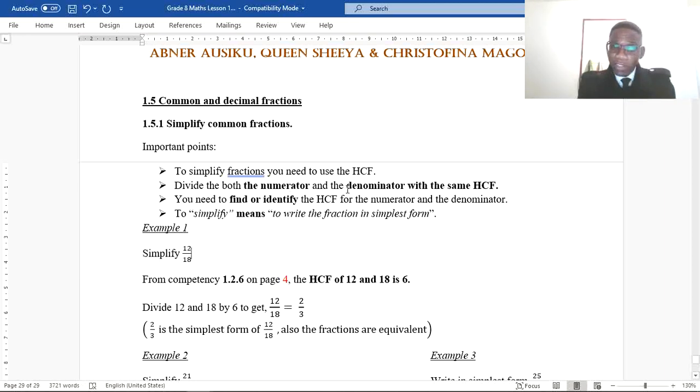Your job when you're given something like this is to make sure that you find the highest common factor of the two numbers in that fraction. Then once you do that, you should now divide each number, the numerator and the denominator, by that same number. So now 2 over 3 is in simplest form. Why is it in simplest form? Because there's no other number apart from 1 that can divide 2 and 3.